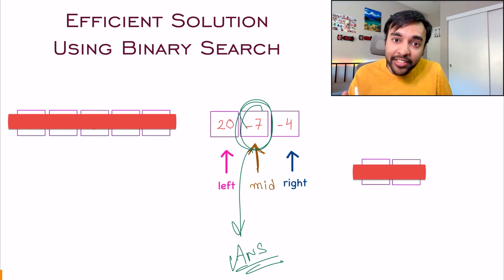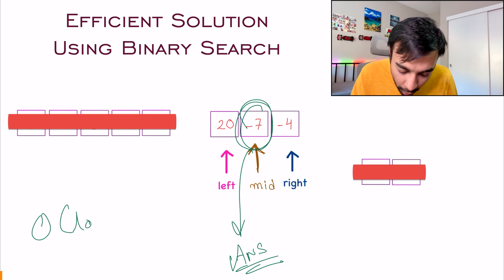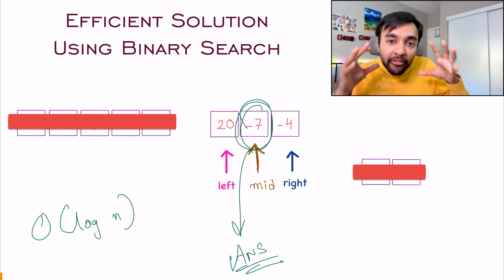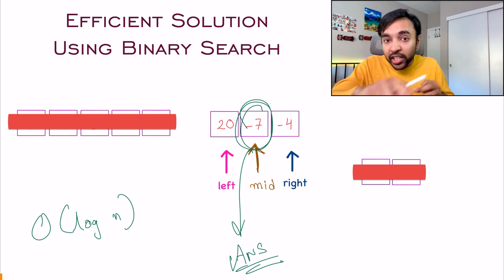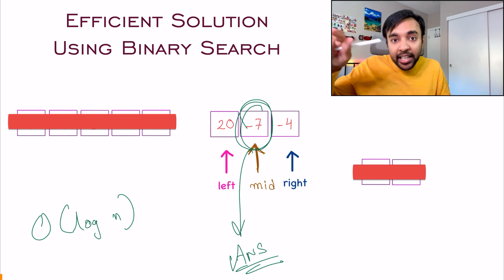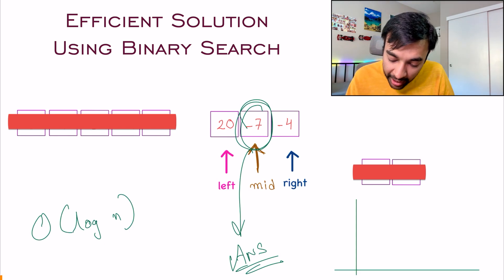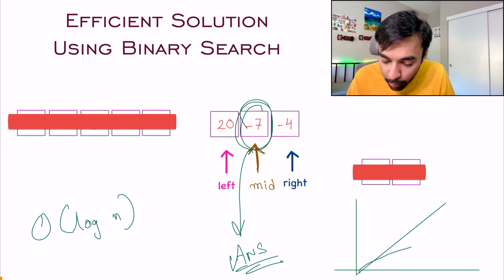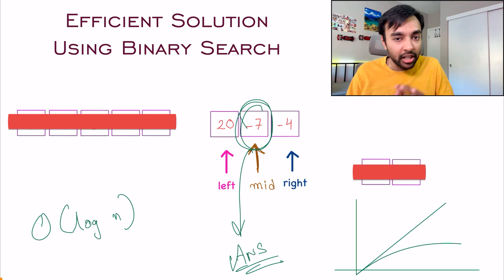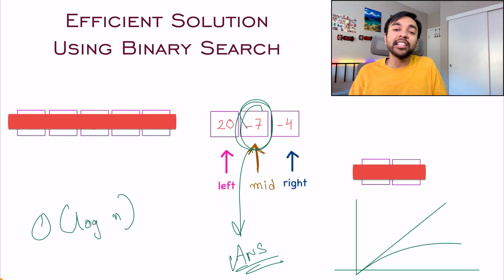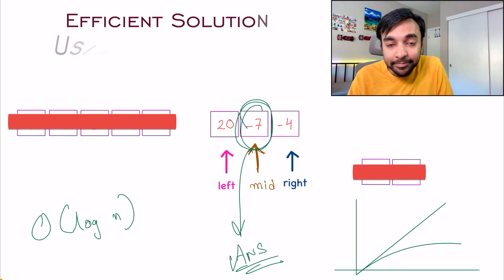Notice that at every iteration we are applying binary search and getting rid of half of the array. This gives you a time complexity of O(log n), which is very much faster than O(n). Order of n increases linearly, whereas order of log n grows much more slowly — and that is a significant reduction in the time taken. Now, based upon this idea, let us quickly do a dry run of the code.